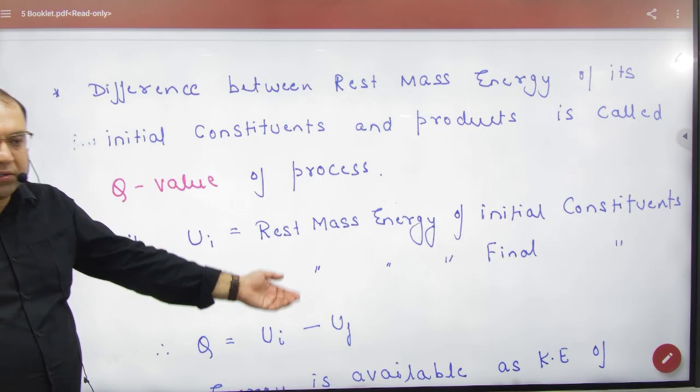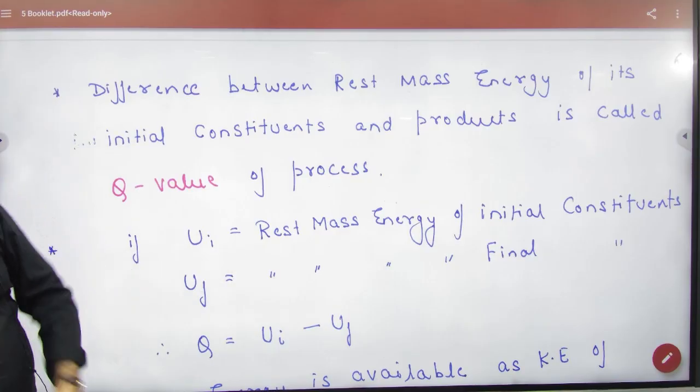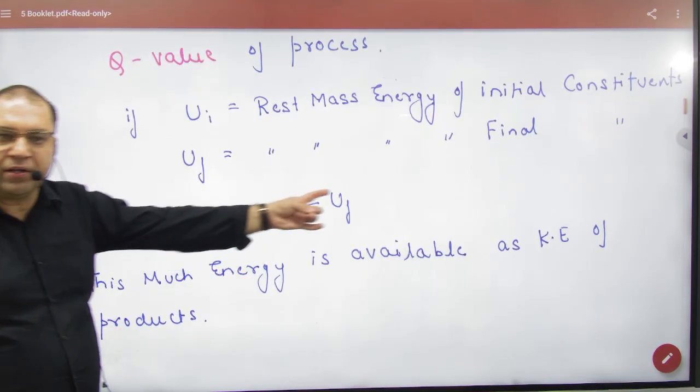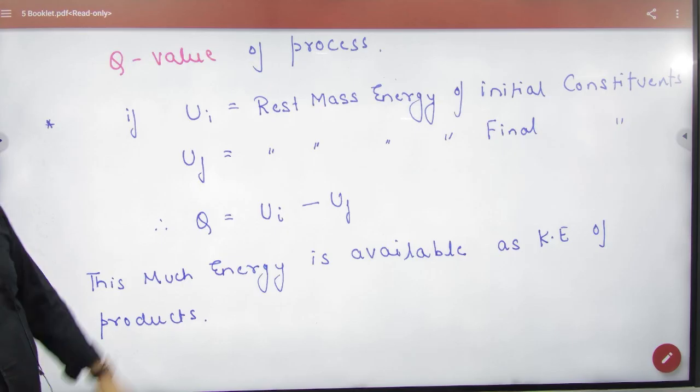And if the products convert their mass into energy, that energy is Uf. Q-value is initial energy minus final energy, Ui minus Uf. We call this the Q-value.